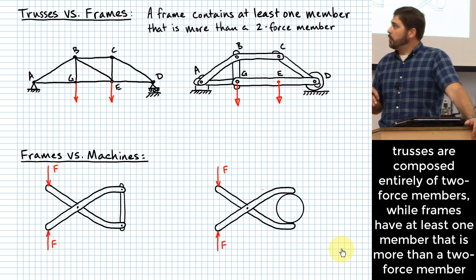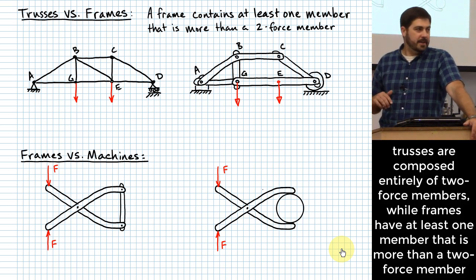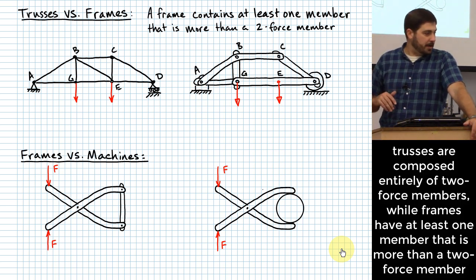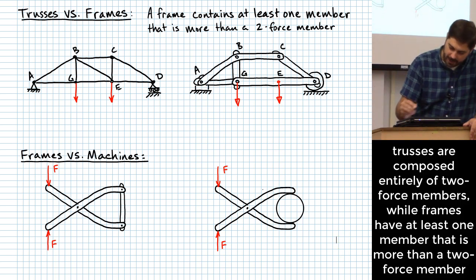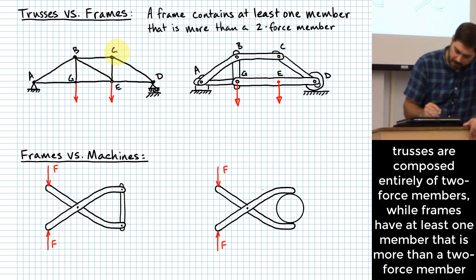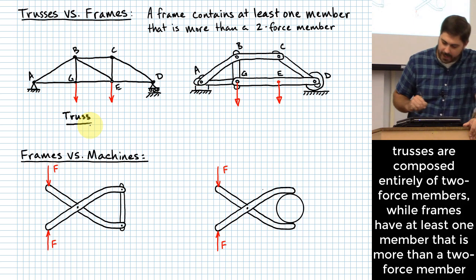You might see there are two different structures shown here. The one on the left is a truss — all of the members that compose that structure are two-force members.